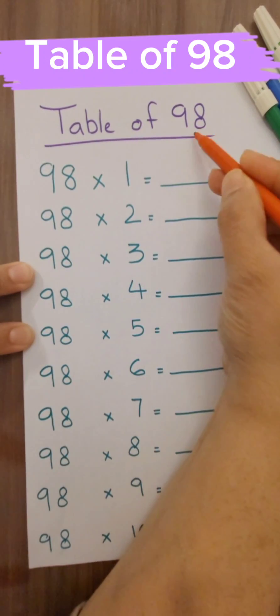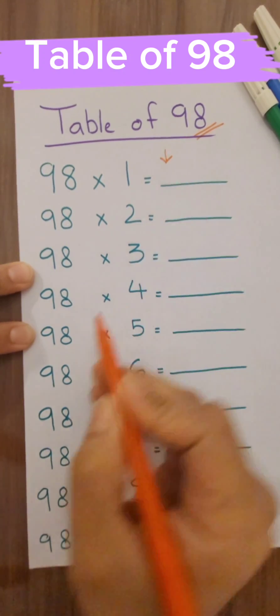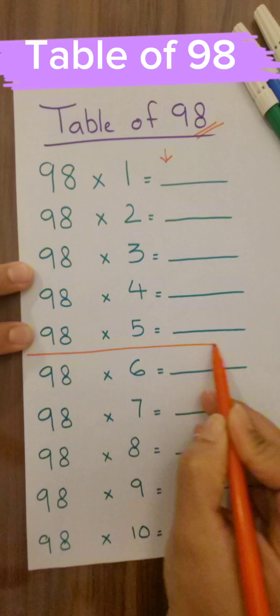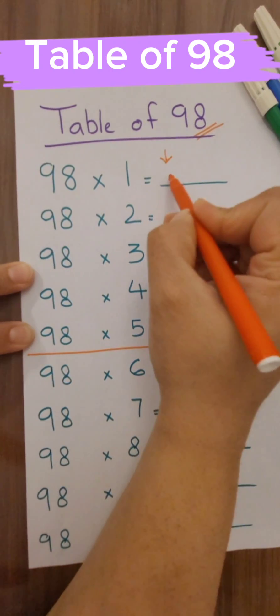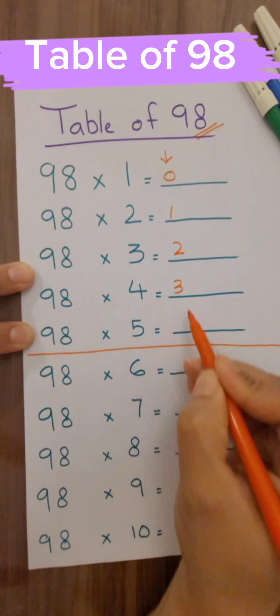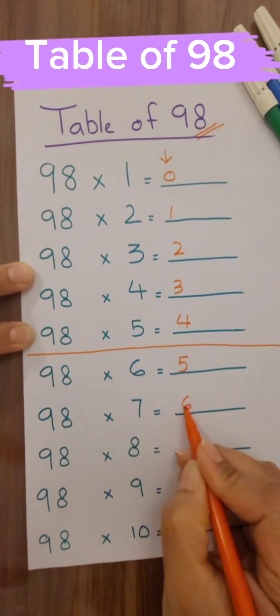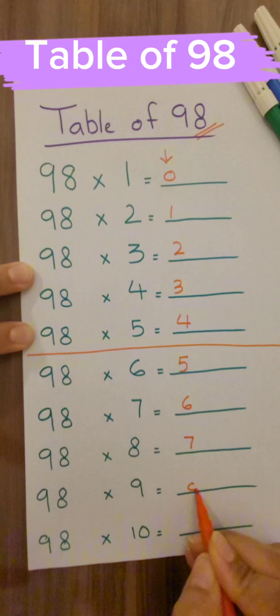Hello and a very good day to all of you. Today I'm going to teach you the table of 98. So first, divide it into two halves. Now start from here: 0, 1, 2, 3, 4, 5, 6, 7, 8.